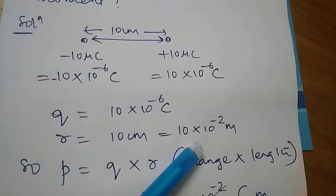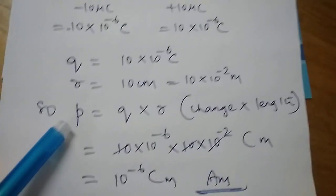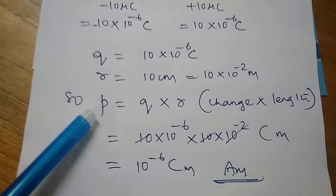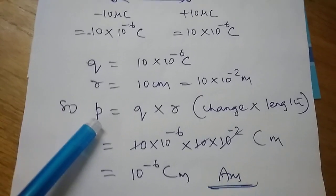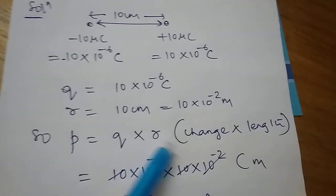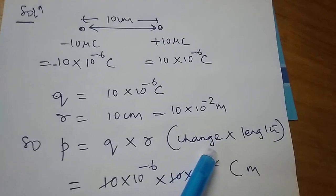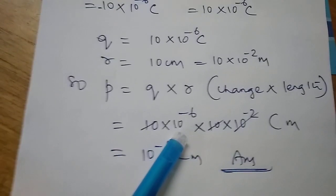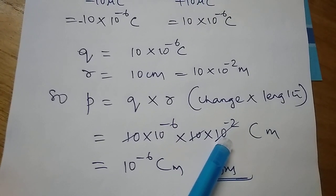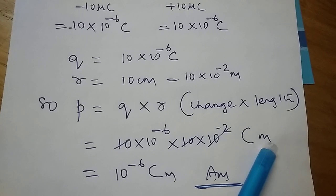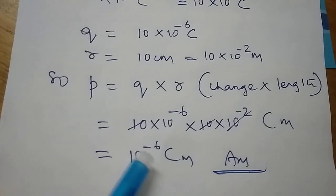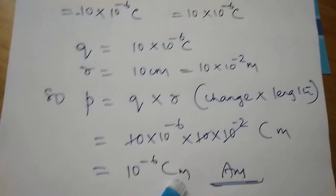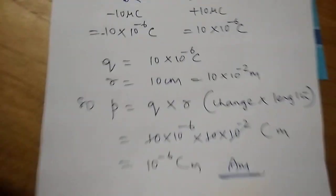P represents the electric dipole moment. So electric dipole moment is equal to charge into length, which means length between two charges. So Q × R. Q is 10 × 10^-6, R is 10 × 10^-2, and the unit is coulomb·m. So the answer is 10^-6 coulomb·m. I hope you understand this simple problem.